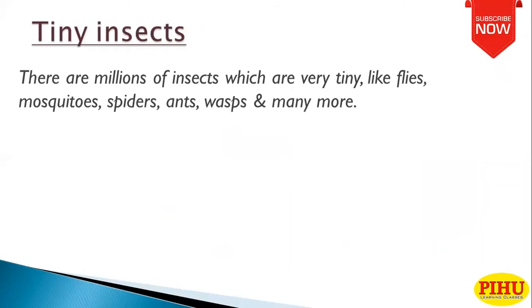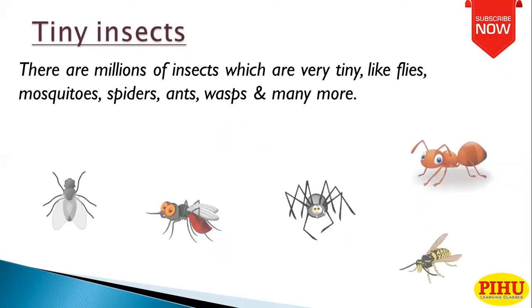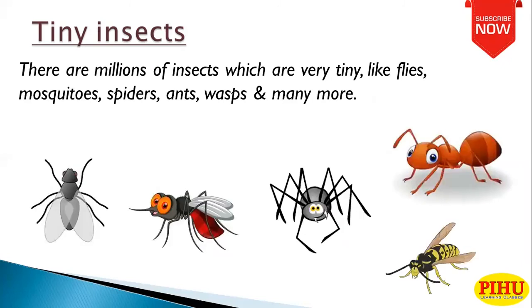Tiny insects: there are millions of insects which are very tiny, like flies, mosquitoes, spiders, ants and many more.